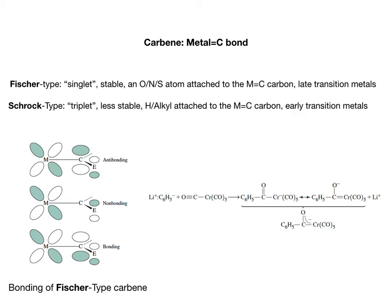Fischer carbene is typically found in late transition metals such as iron and ruthenium. The second type is called Schrock type. This is an interaction between the metal and triplet carbene. In the triplet carbene, the two electrons are located in two different orbitals, so this is essentially a bi-radical. Schrock type carbene complexes are much less stable and much more reactive. Structure-wise, a key feature is that there's no heteroatom attached to the alpha carbon; instead, you'll only find protons or alkyl ligands on the alpha carbon. They are typically found in early transition metals such as titanium.